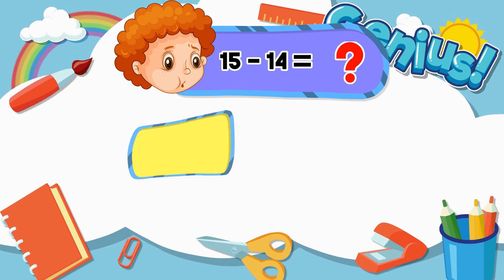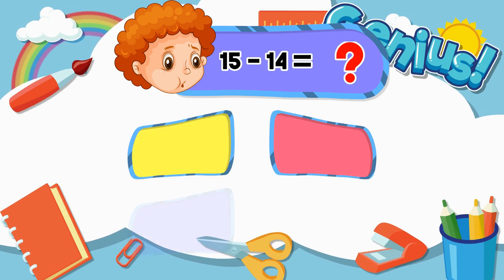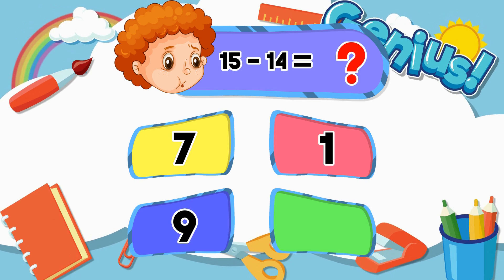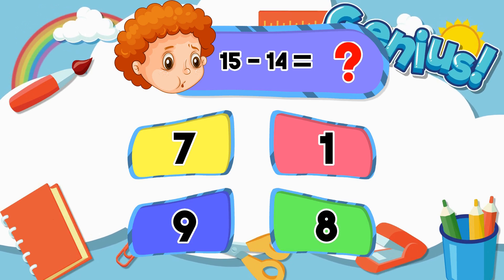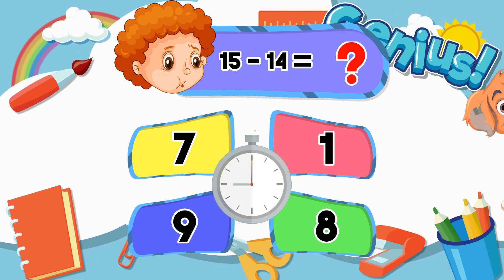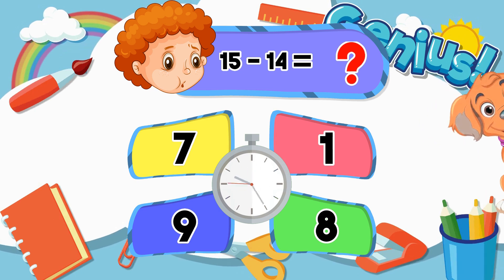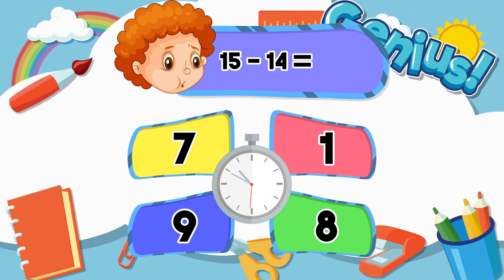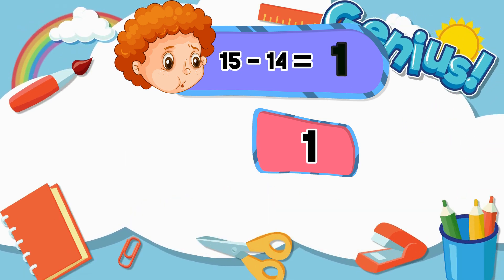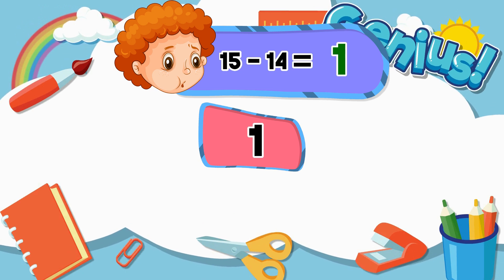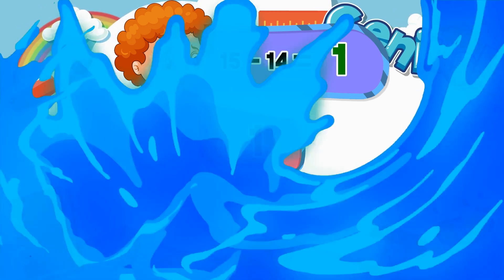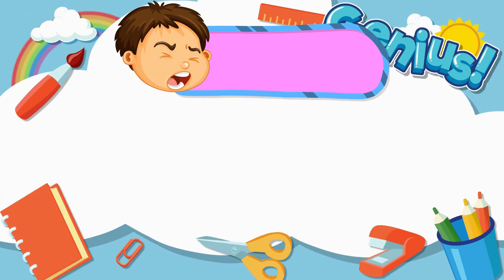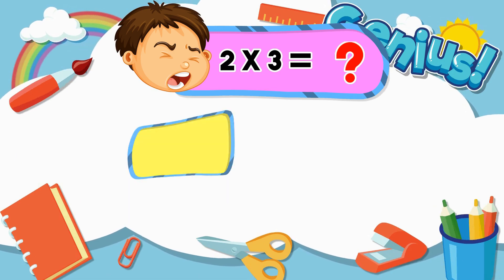What is fifteen minus fourteen? Seven. One. Nine. Eight. One.